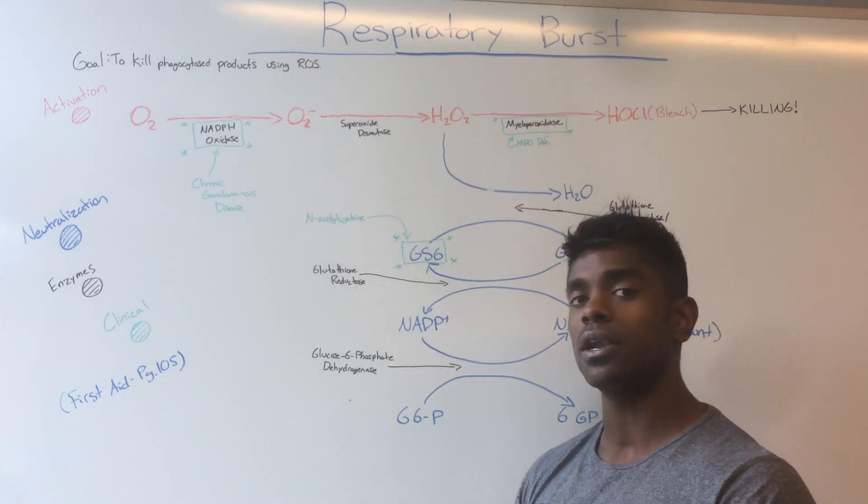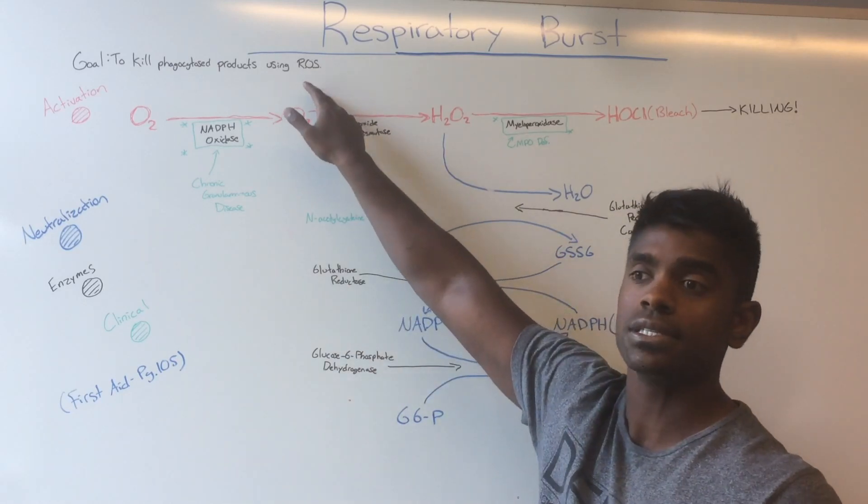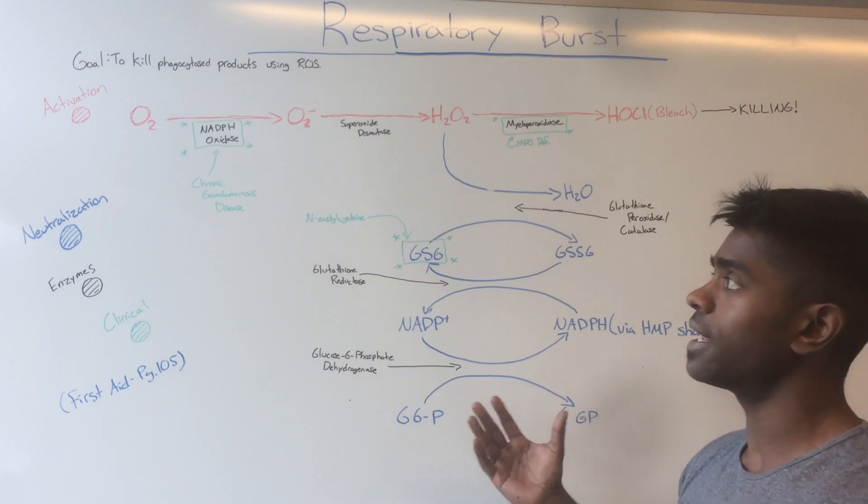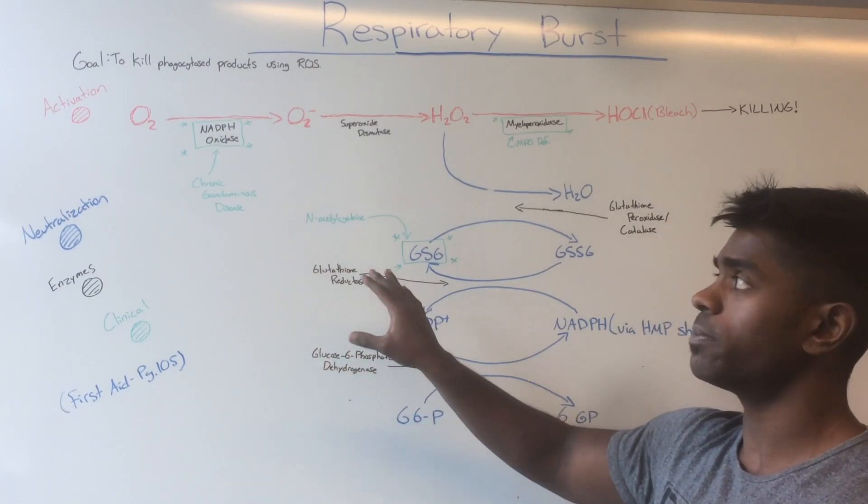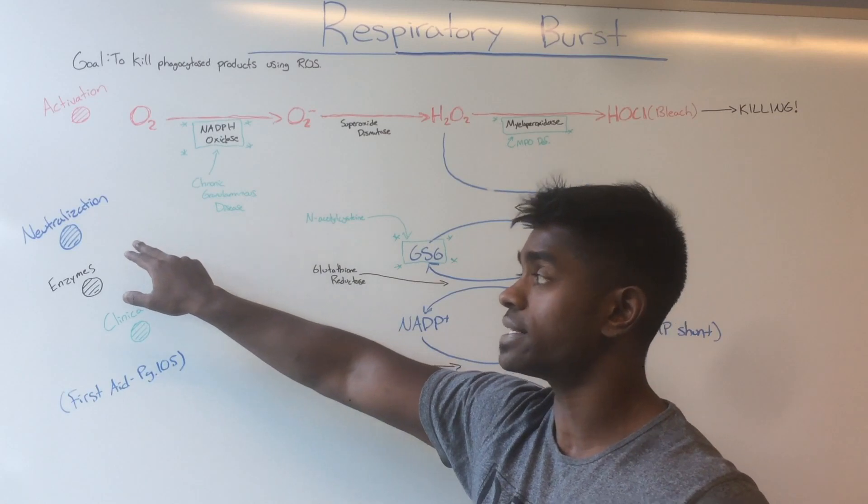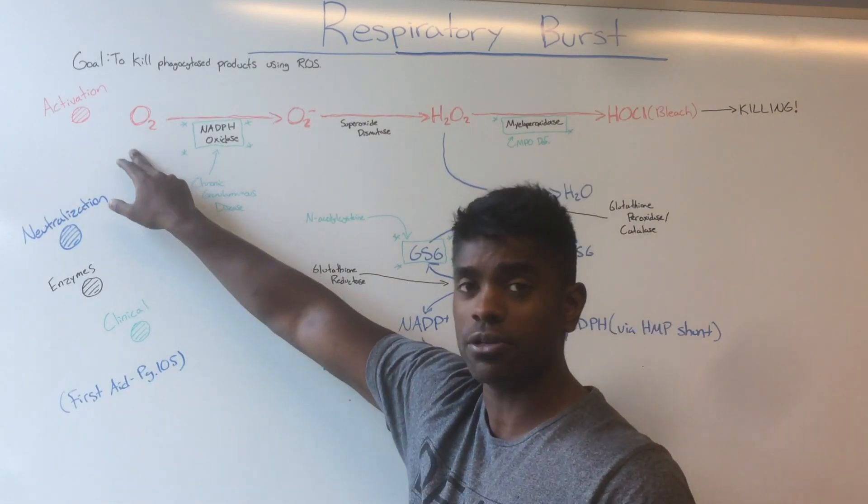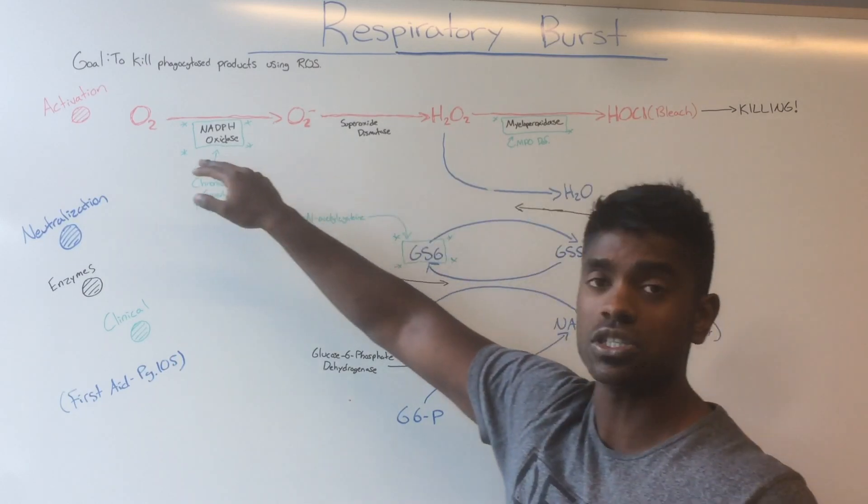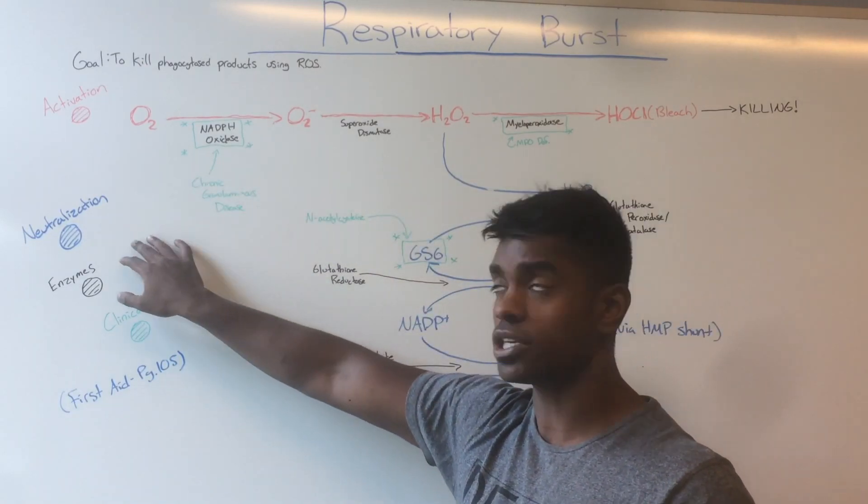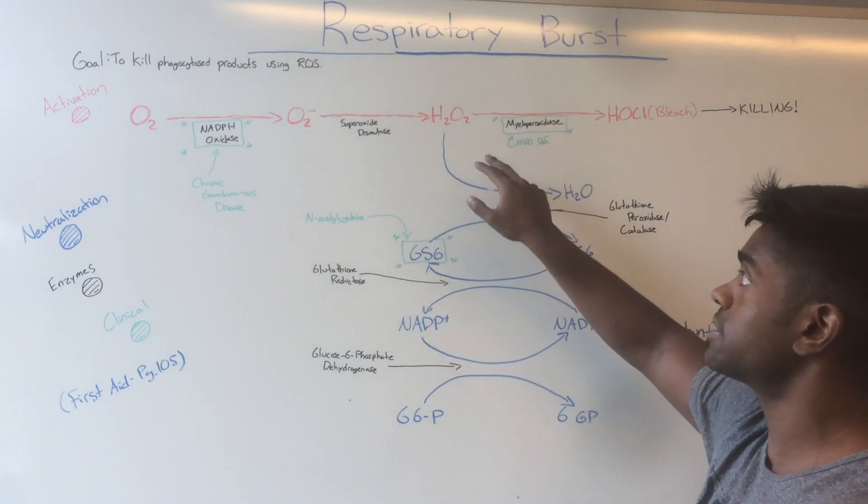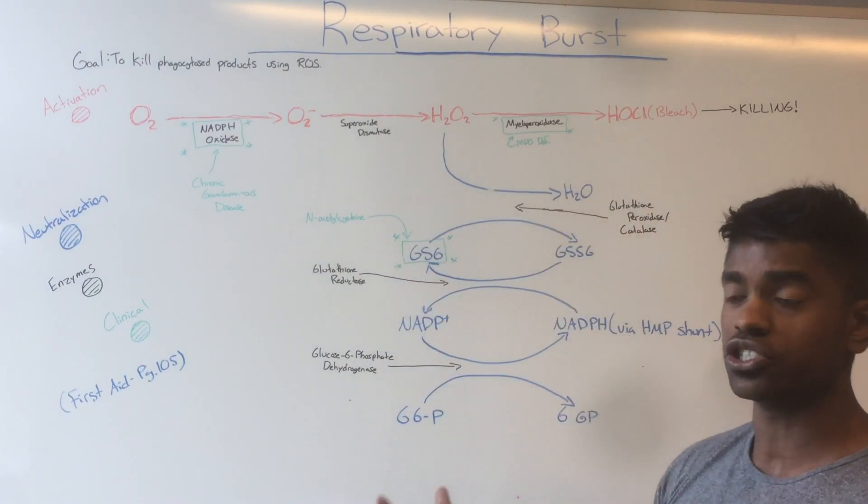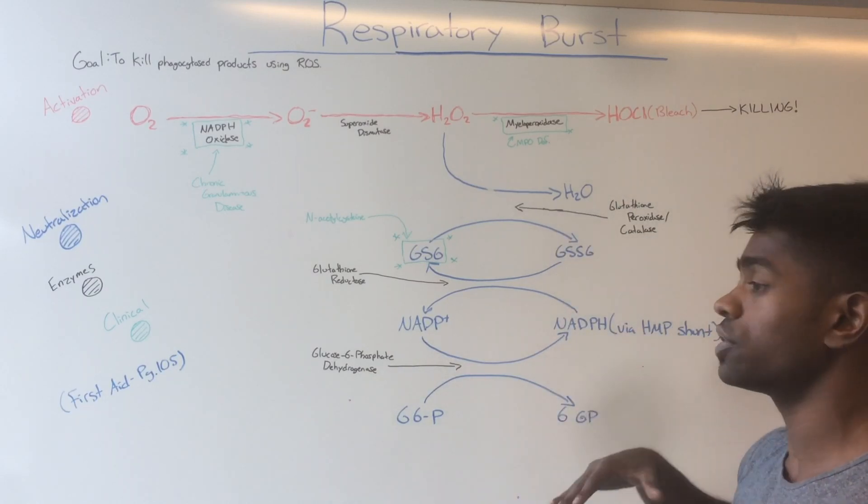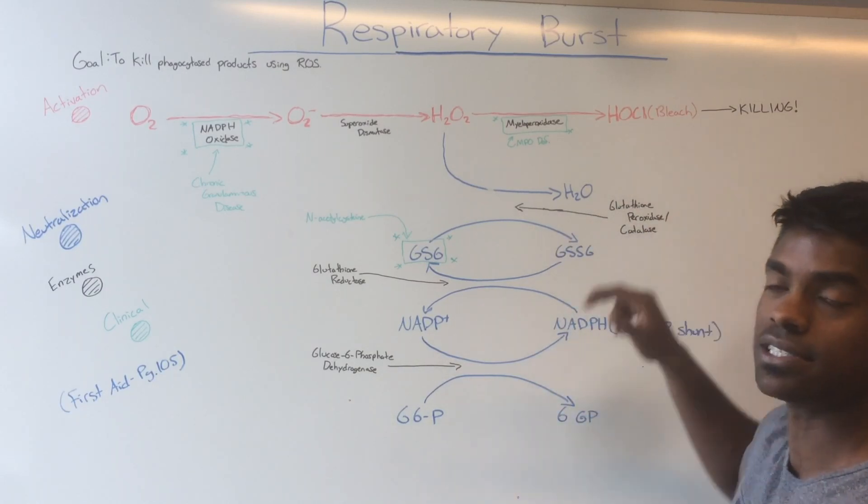In order to kill these products, they use reactive oxygen species. The respiratory burst pathway breaks into two main pathways: the activation path and the neutralization path. The activation path activates reactive oxygen species from molecular oxygen, whereas the neutralization path neutralizes these reactive oxygen species so they don't affect the cell itself, as these species are quite damaging to the cell.